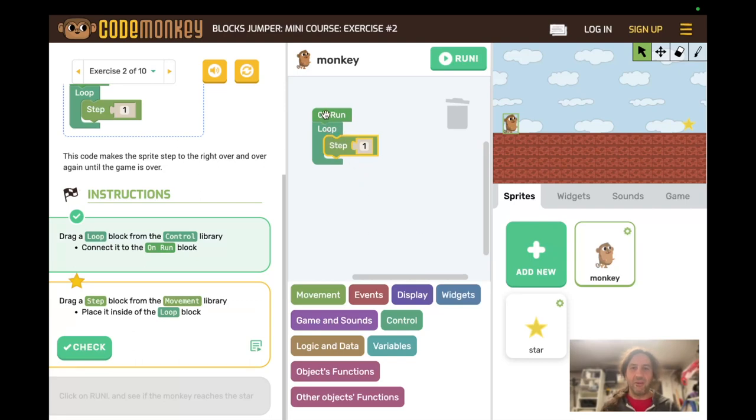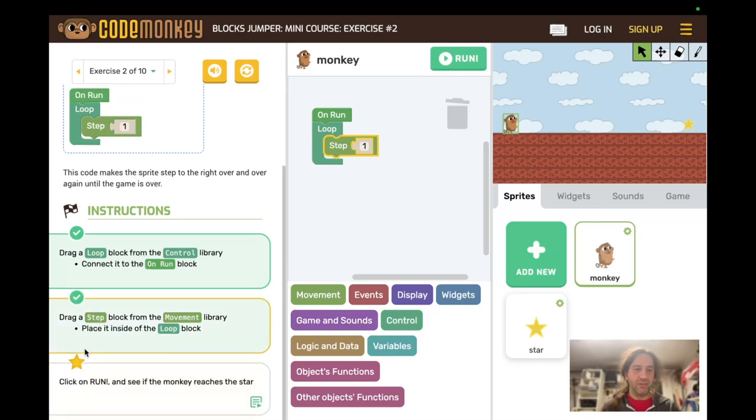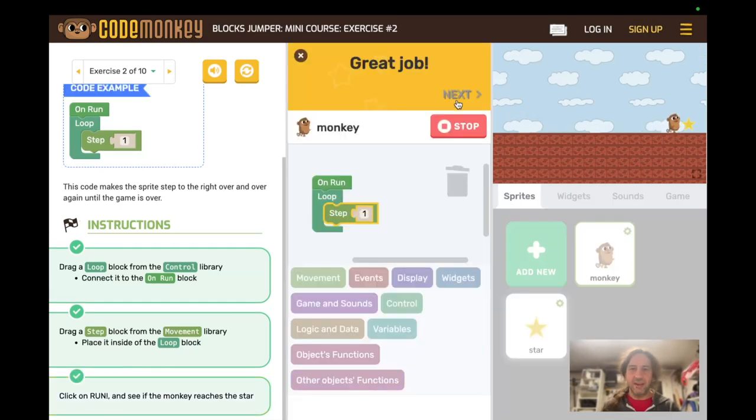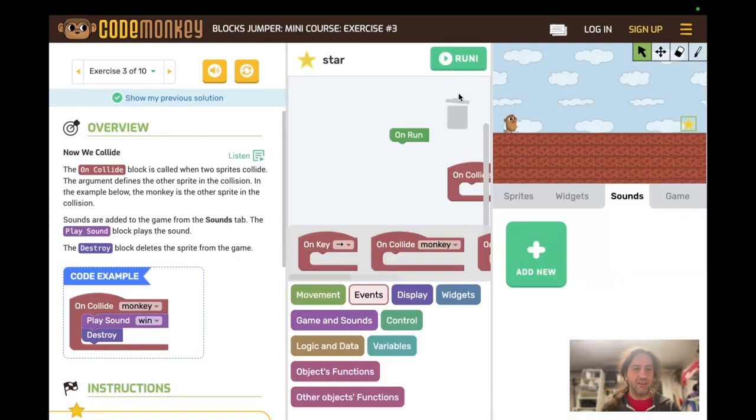So we're just going to check this part and then we need to go back to the movement library and put our step one in a loop. So now when we hit run we're going to loop forever until we hit stop step one forward. Does that look right? Yes. So now click on run and see if the monkey reaches the star. And we don't have to hit stop or anything like that. Just click next. Great job.